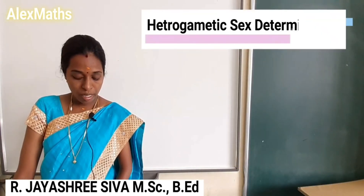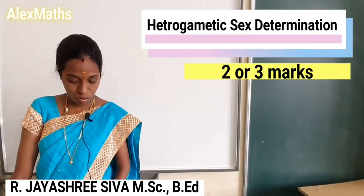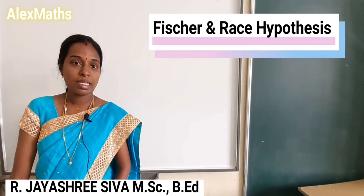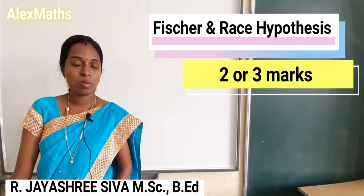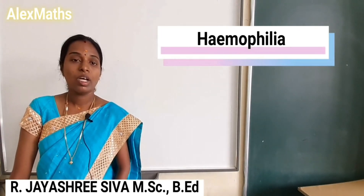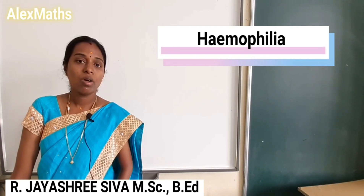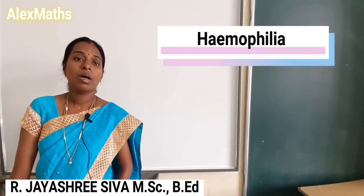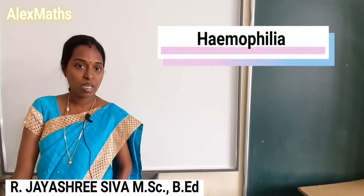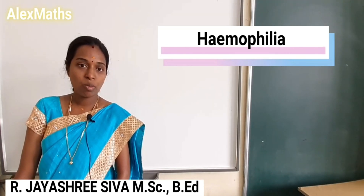What is heterogametic sex determination? This is a 2-mark or 3-mark question. Define Fisher and Race Hypothesis — this is a very important question. Define Haemophilia. Haemophilia relates to the blood clotting factor — the absence of sufficient blood clotting is the condition known as haemophilia.